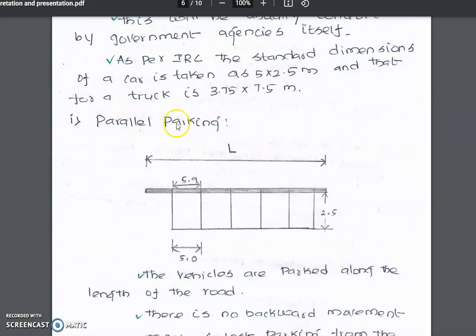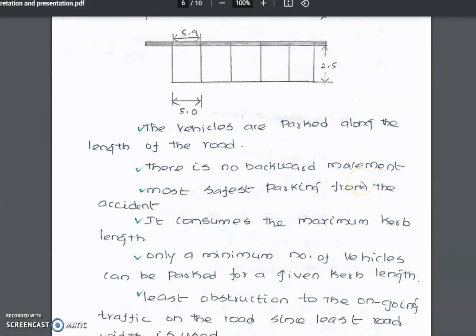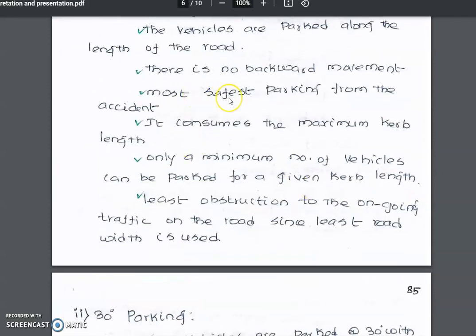First category: parallel parking. The vehicles are parked along the length of the road with no backward movement, only forward driving. This is the safest parking from accidents. It consumes maximum curb length, so only a minimum number of vehicles can be parked. It causes the least obstruction to ongoing traffic since the least road width is used.